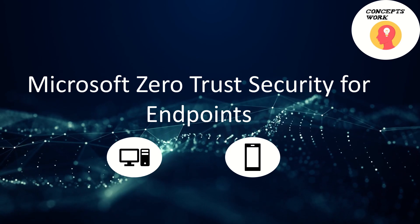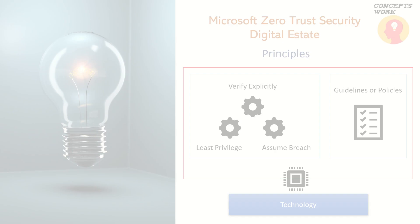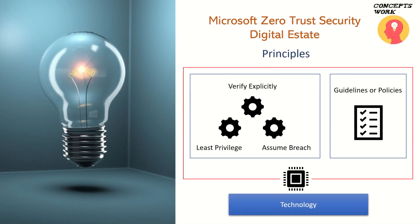Before we talk about security for endpoints, let's take a step back and recall the principles of Zero Trust security. The first one is verify explicitly, then you have to make sure each and every request is getting authorized, then the concept of least privilege, and assume breach strategies. Once you add these three principles with the guidelines and policies for your enterprise and use the right technology, you can achieve Zero Trust security.